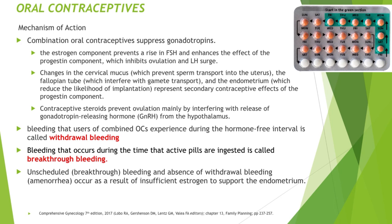Bleeding that users of combined OCs experience during the hormone-free interval is called withdrawal bleeding — this is the menses that occurs after stopping the active oral contraceptives. Bleeding that occurs during the time that active pills are ingested is called breakthrough bleeding, meaning bleeding that happens during the course of intake of the oral contraceptive pills. Unscheduled or breakthrough bleeding and absence of withdrawal bleeding occur as a result of insufficient estrogen to support the endometrium.